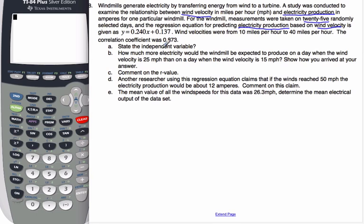State the independent variable. X is our independent variable, and if we're thinking about electricity production based upon wind velocity, the independent variable must be the wind velocity because the electricity is based upon the wind.